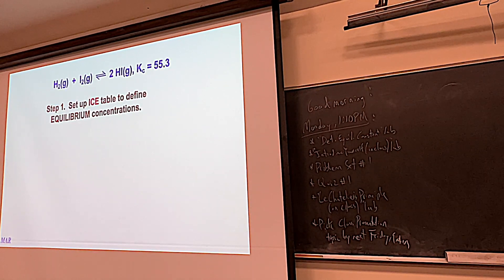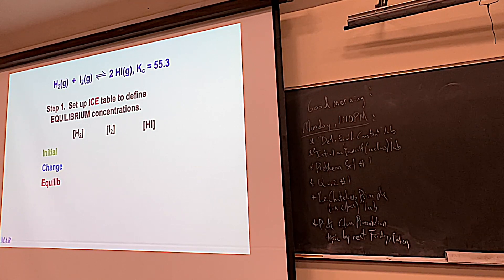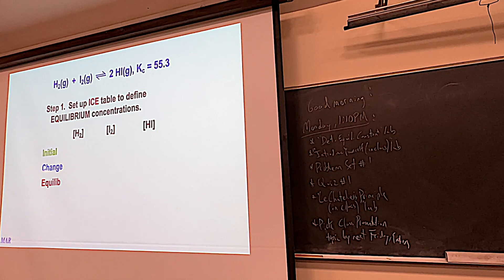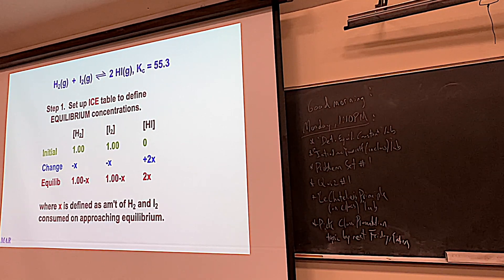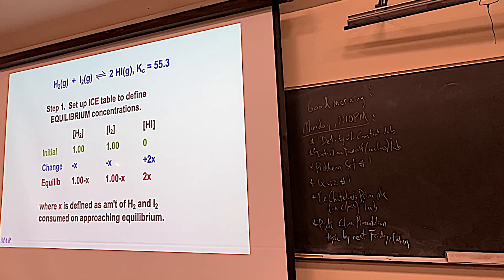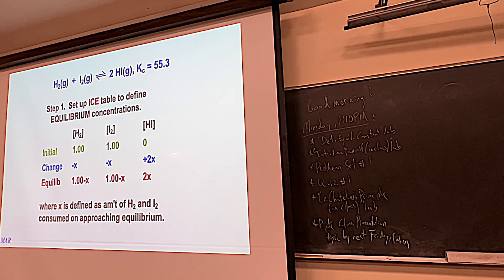When you see a problem like this, the first thing to do is set up an ICE table — Initial, Change, Equilibrium. Put reactants on the left and products on the right. For this problem, you're starting with 1 mol/L H2 and 1 mol/L I2, and zero HI. The change row: reactants are negative, products are positive. The stoichiometry 1, 1, 2 is exactly what you'll see in the change row — minus x, minus x, plus 2x.